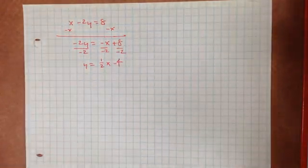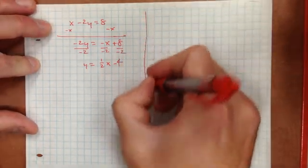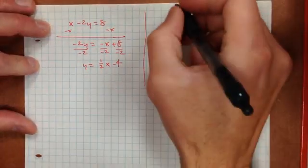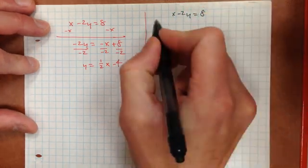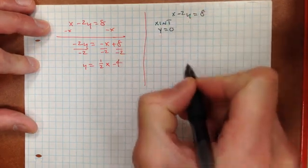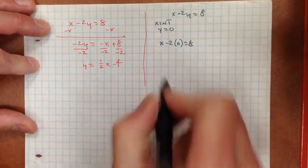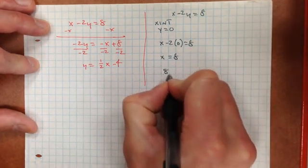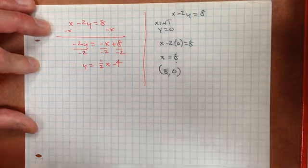A secondary approach would be to find the intercepts. For the x-intercept, make y equal to 0: x minus 2 times 0 equals 8, so x equals 8. The point is (8, 0).